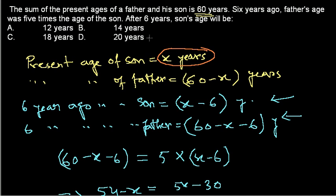So 20 years — option D is the correct answer. After 6 years, the son's age will be 20 years. So that is it guys, and I hope that is helpful. Thank you.